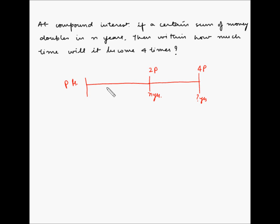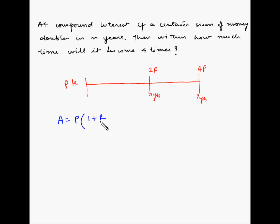In compound interest, at the end of every year the interest gained during that year is added to the principal at the beginning of that year, and that amount becomes the principal for the next year on which the interest is gained. We know that Amount = Principal × (1 + r/100)^n.